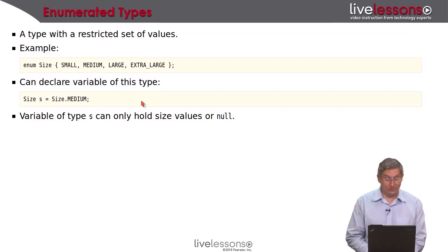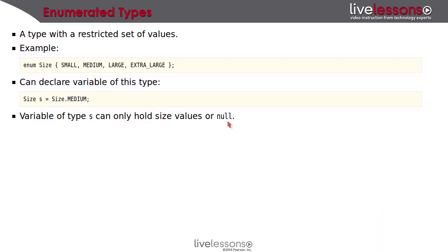Well, that's almost correct. It can be a fifth value, namely the value null. That means that none of these applies. For any enumeration, or for that matter, for any object variable as we'll see soon, there's always the possibility that it's set to null.